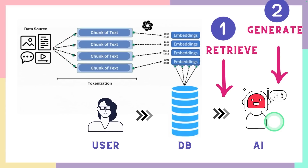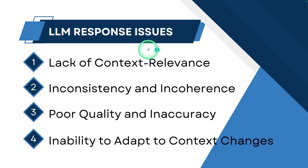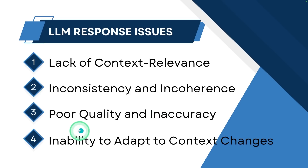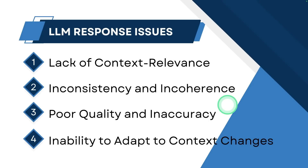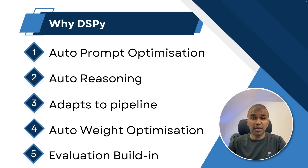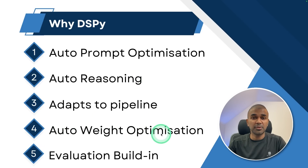Similarly, the second area where issues could happen is when the large language model generates a response. The response could have lack of context and relevance, inconsistency and incoherence, poor quality and inaccuracy, and inability to adapt to context changes. If we fix these manually, it's going to take a lot of time, and when you change your system or large language model, you need to change it again. So why DSPY? It can automatically optimize your prompts, has auto reasoning built in, adapts to the pipeline, has auto weight optimization, and evaluation built in.